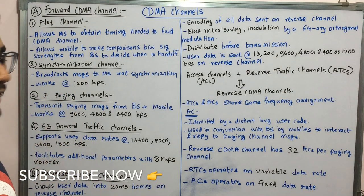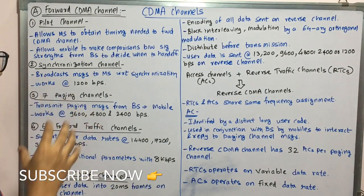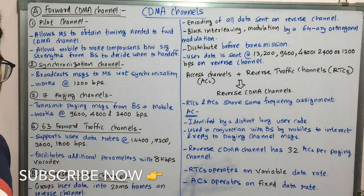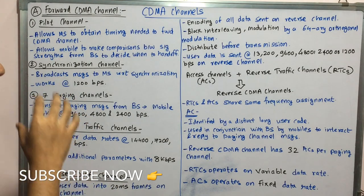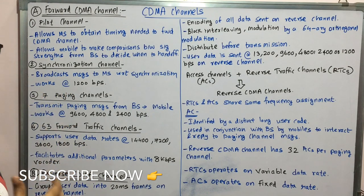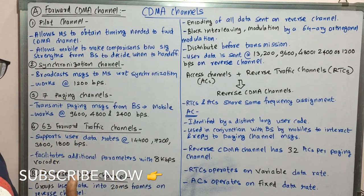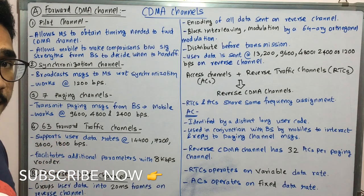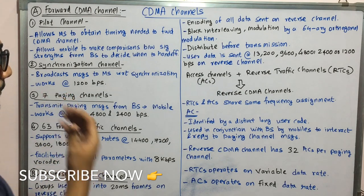Next you have the paging channels. In the forward CDMA channel there are seven paging channels. They transmit paging messages from the base station to the mobile and work at speeds of 9600, 4800, or 2400 bits per second.